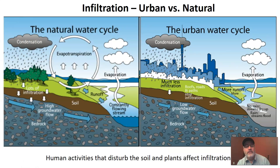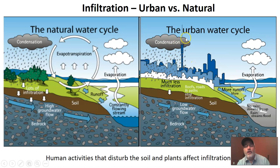I want to think about infiltration and how what's at the surface is going to impact it. Here we have what's called the natural water cycle. Notice that this is a forested area with some meadows, and over here we have an urban area — a city with skyscrapers and the like. So let's think about infiltration — where the water first seeps into the ground — and compare these two areas.